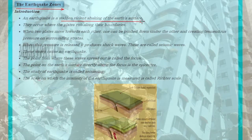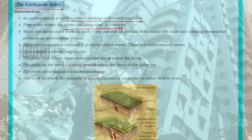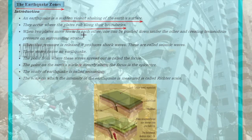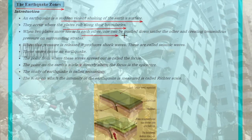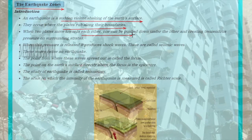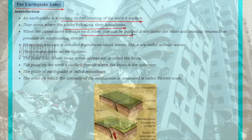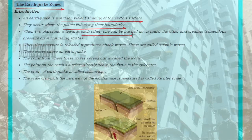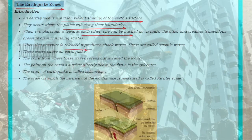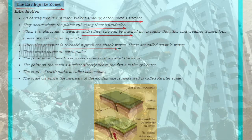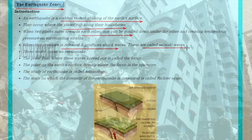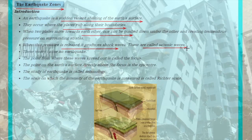Earthquakes occur when plates rub along their boundaries. When these plates move towards each other, one plate is pushed upwards and others down, creating a tremendous pressure inside the Earth's surface. This pressure is released and produces shock waves, known as seismic waves, which cause an earthquake.